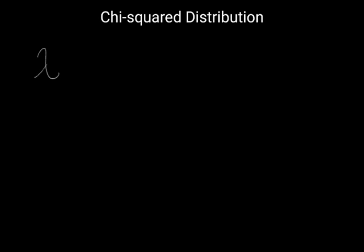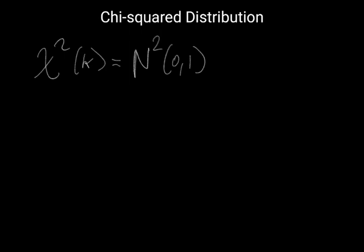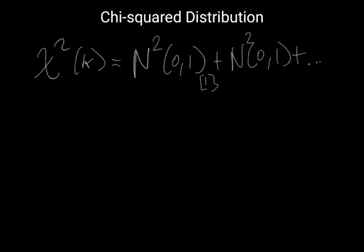In this video, we'll be discussing the chi-squared distribution. A chi-squared distribution with k degrees of freedom is equivalent to summing the squares of standard normal distributions — one standard normal squared, plus another standard normal squared, up to k standard normals squared, indexed 1, 2, through k. So it is summing k many standard normal distributions, each of which are squared.